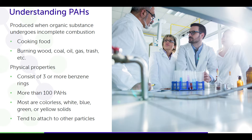They are materials that consist of three or more benzene rings. There are more than a hundred different structural isomers. Most of them are colorless white, blue, green, or yellow solids. They tend to attach to other particles and travel on soot and particulate in the air.